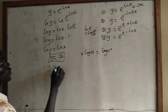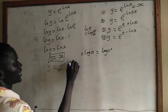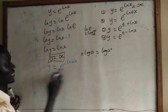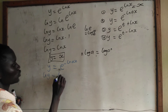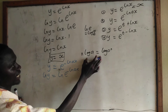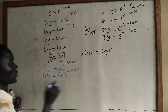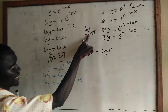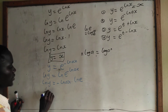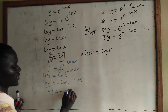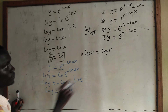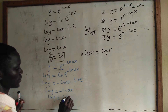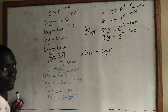Now let us look at the second one. We have y equal to e to the power negative ln ax, where a is a constant. If we take ln of both sides, we have ln y equal to ln of e to the power negative ln ax. From the law of logarithm, we have ln y equal to negative ln ax times ln e, which gives ln y equal to negative ln ax, since ln e is 1.